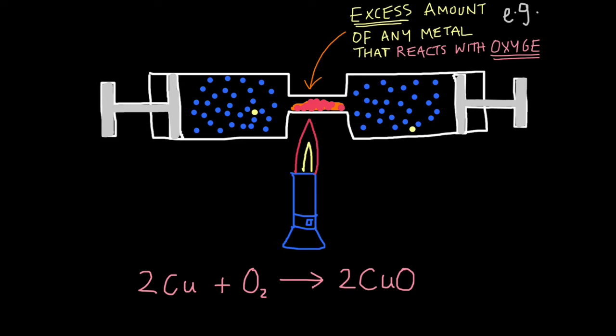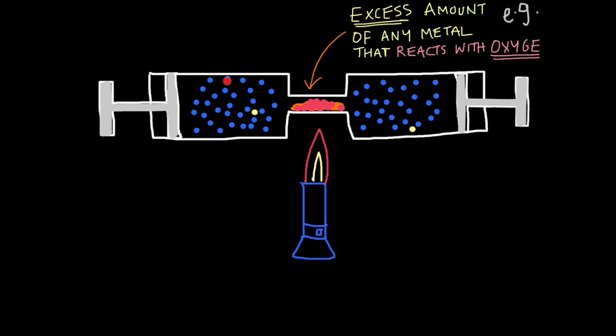So this chemical reaction can be summarised using this equation. Two atoms of copper plus one molecule of oxygen will produce two molecules of copper oxide. You could adjust this equation for different metals. So you could put magnesium here and magnesium here instead if you wanted.